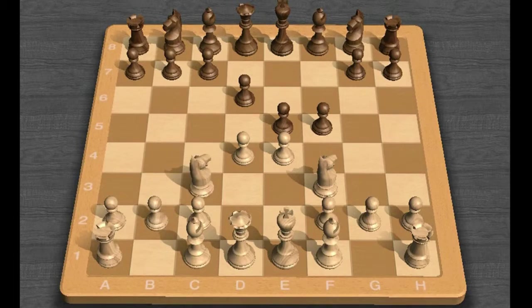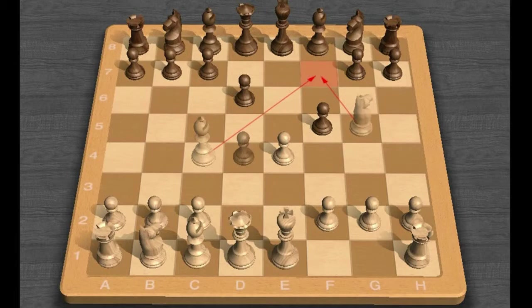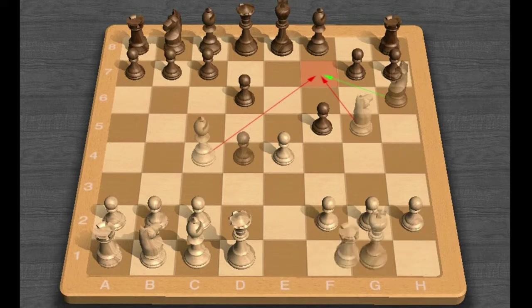Another good way to meet this line is Bishop C4, E captures D4, Knight G5 attacking F7, Knight H6 defending the threat, and then castles.